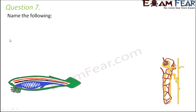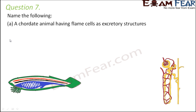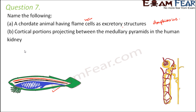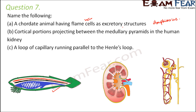Question number 7: name the following. First — a chordate animal having flame cells as excretory structures. Flame cells are the specialized excretory structures in platyhelminthes, and the chordate animal with flame cells is amphioxus. Second — cortical portions projecting between the medullary pyramids in the human kidney. The cortex forms column-like structures between the medullary pyramids, known as renal columns or columns of Bertini.